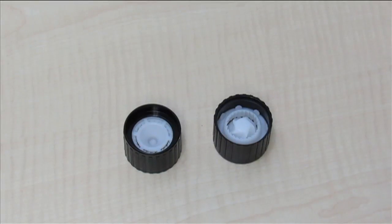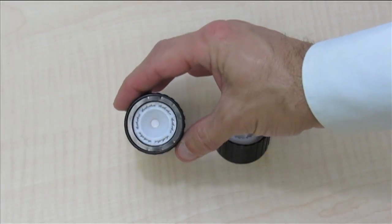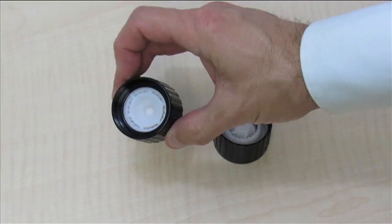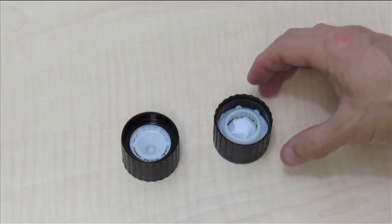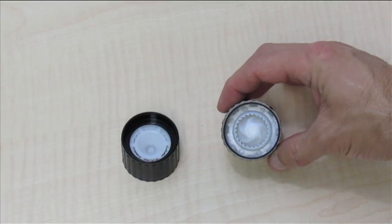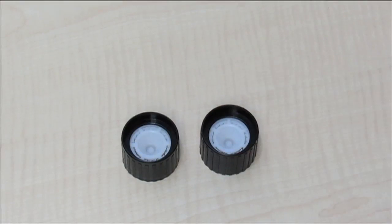These caps are being inspected in a feeder bowl application and we want caps that are right side up with the cone pointing down to be accepted and caps that are upside down with the grinder mechanism facing up to be rejected. All caps coming out of the feeder bowl need to be in the correct orientation.